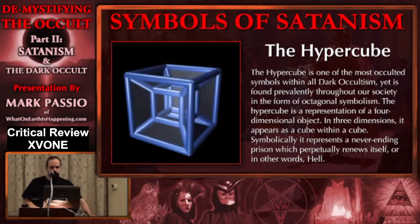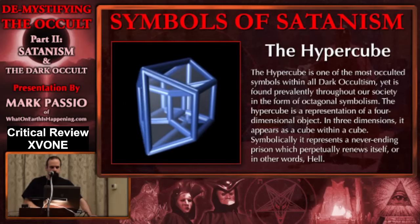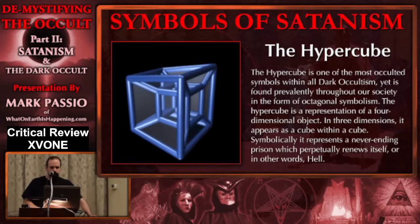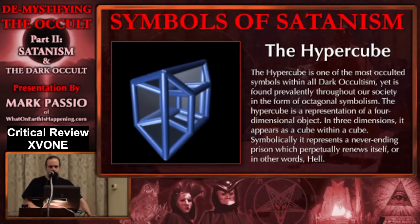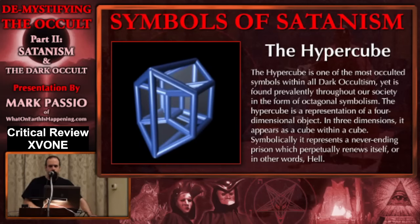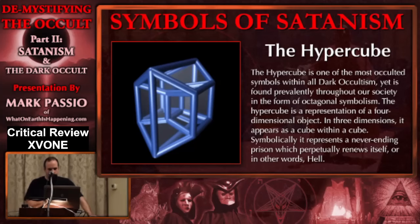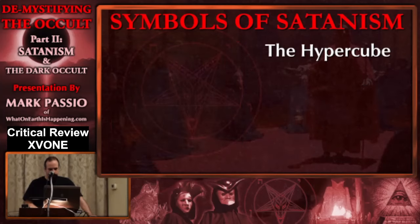The hypercube folds in upon itself, then there's another cube. The outside folds around it, and then there's another cube inside. It just goes round and round — around the matrix, rebooting it. The perpetual prison is the concept that the hypercube represents symbolically.